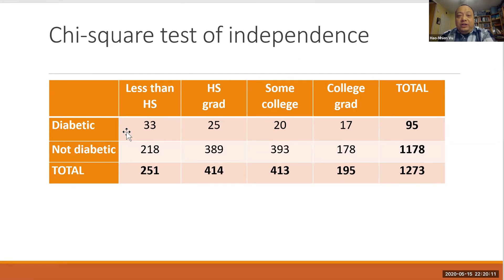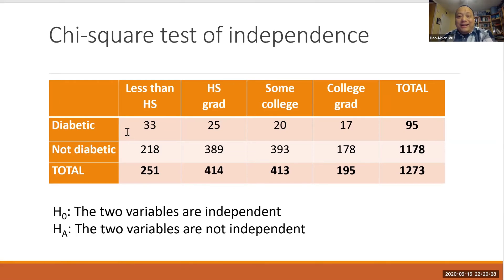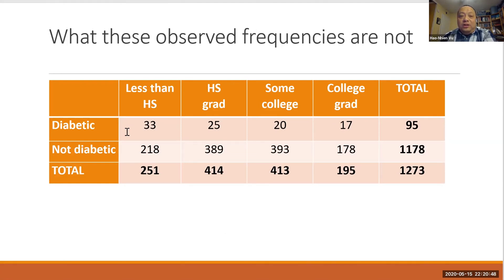In the chi-square test of independence, we're testing whether or not these two variables - educational level and diabetic status - are independent. The null hypothesis is that they are independent, and the alternative hypothesis is that they are not independent. So before computing the expected frequencies, let's first see what the observed frequencies are not.